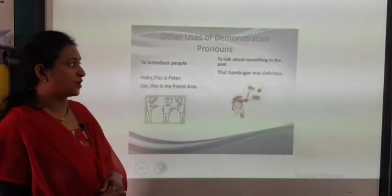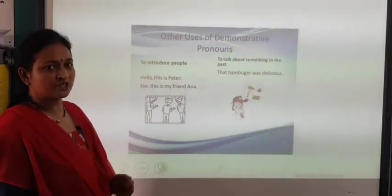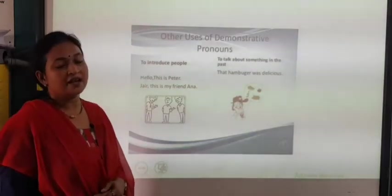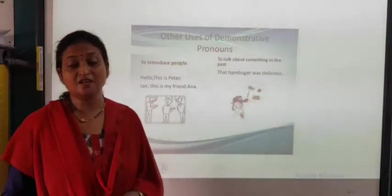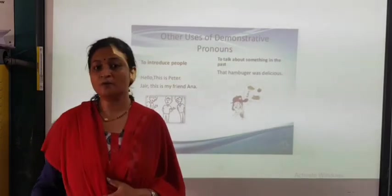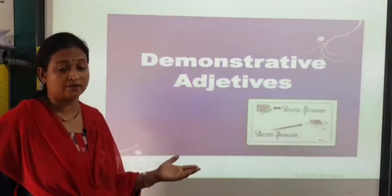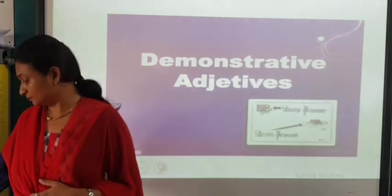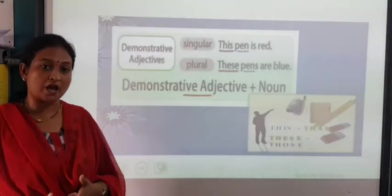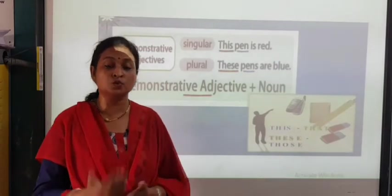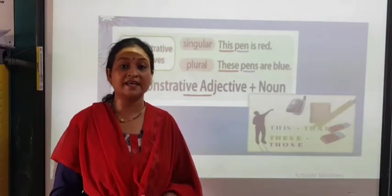Other uses of demonstrative pronouns: they can introduce people — 'Hello, this is Peter' or 'Jay, this is my friend Anna.' They can also talk about something in the past — 'That hamburger was delicious.' For demonstrative adjectives, for example: 'these flowers,' 'those flowers' — here it is describing the noun flower. Children, the words are the same for pronoun as well as adjective. You just have to see the usage: if it is used in place of a noun, it is a pronoun; if it is describing a noun, we call it an adjective.